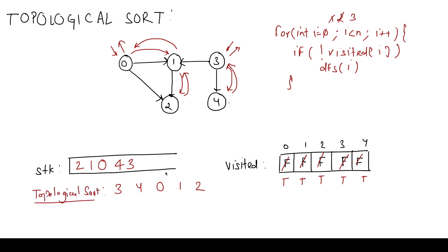We can verify this ordering. The edges are 0→1, 1→2, 0→2, 3→1, and 3→4. For 0→1: 0 comes before 1. For 1→2: 1 comes before 2. For 0→2: 0 comes before 2. For 3→1: 3 comes before 1. For 3→4: 3 comes before 4. So 3, 4, 0, 1, 2 is a valid topological sort.